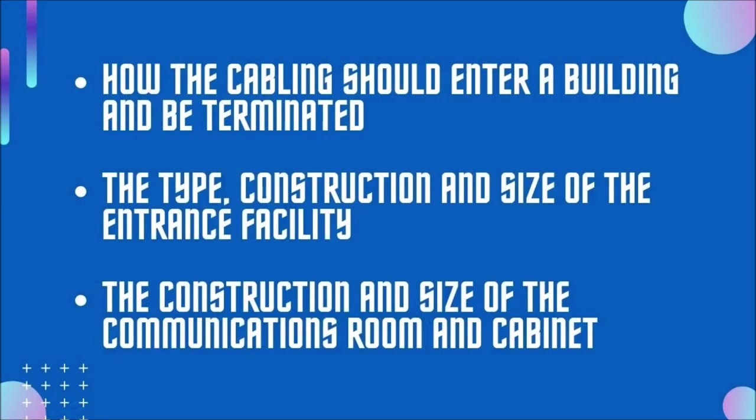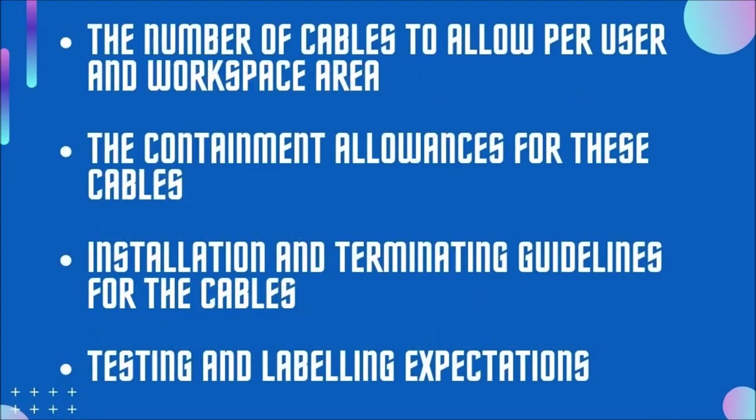How the cabling should enter a building and be terminated. The type, construction and size of the entrance facility. The construction and size of the communications room and cabinet. The number of cables to allow per user and workspace area. The containment allowances for these cables. Installation and terminating guidelines for the cables. Testing and labeling expectations.